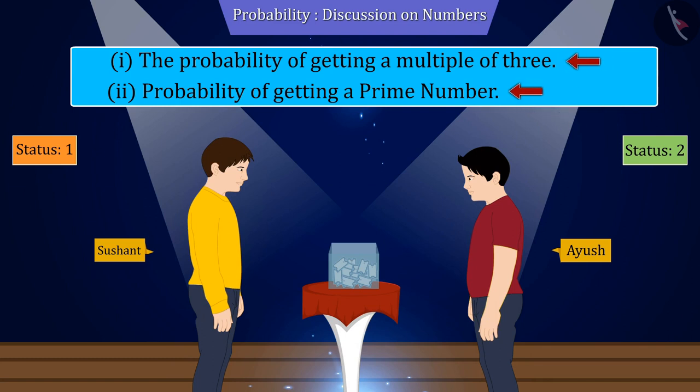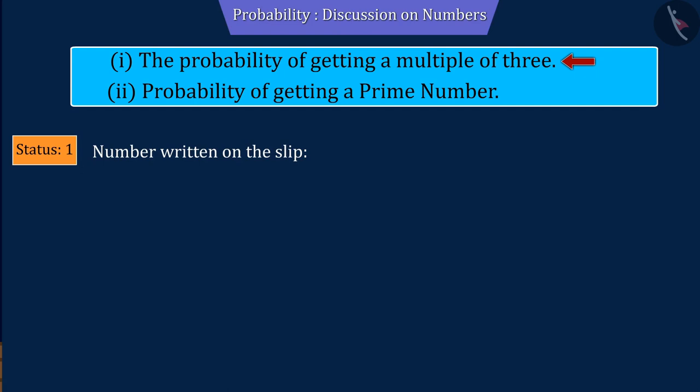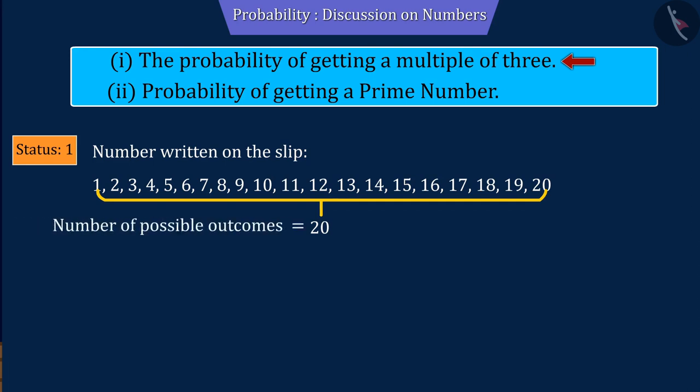Let us now discuss both these events. We know that every slip has a number from 1 to 20. That is, the number of possible outcomes of the experiment will be 20.